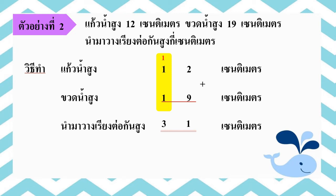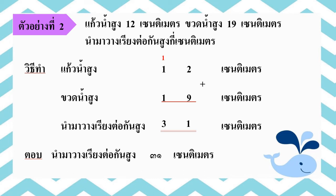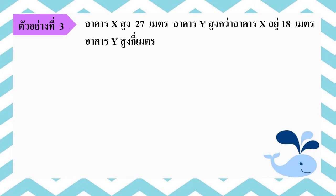ดังนั้นเราสามารถสรุปได้ว่า เมื่อนำแก้วน้ำและขวดน้ำมาวางเรียงต่อกัน สูง 31 เซนติเมตร ต่อมาตัวอย่างที่ 3 อาคาร X สูง 27 m อาคาร Y สูงกว่าอาคาร X อยู่ 18 m อาคาร Y สูงกี่เมตร